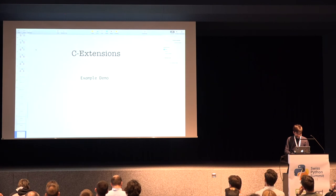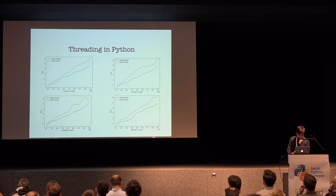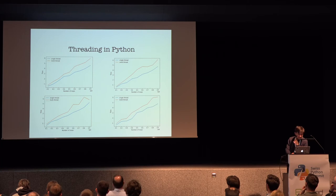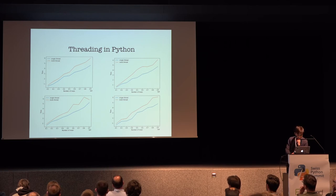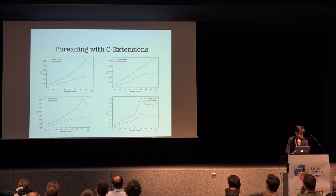Let's get back to the presentation and see some visualizations. This is threading in Python using the count method I used earlier. The blue one is a single thread and the orange one is multi-thread — all of them are almost the same, running on different machines. And this is with C extensions — you can see the multi-thread is better now, taking less time.